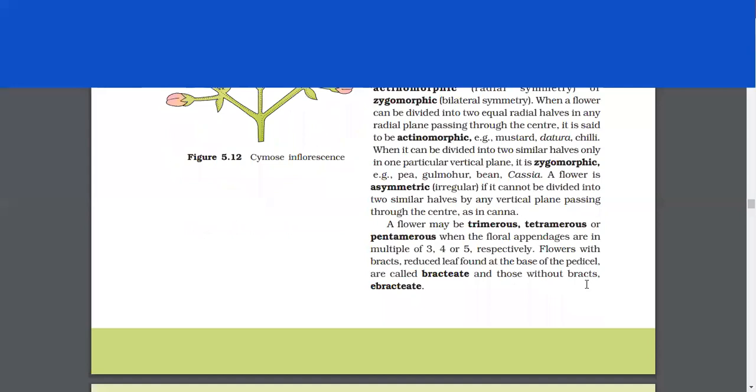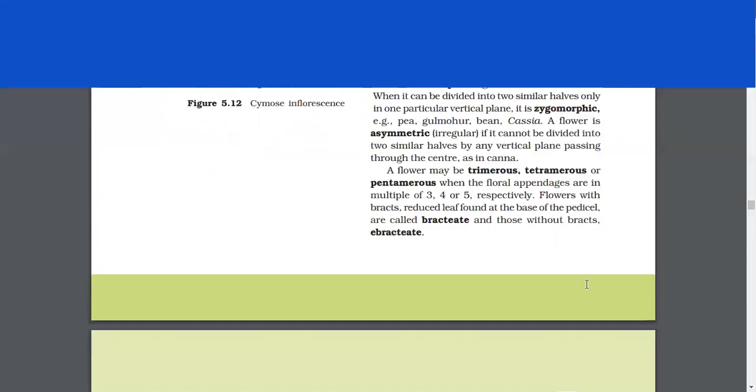A flower may be trimerous, tetramerous or pentamerous when the floral appendages are in multiple of 3, 4 or 5 respectively. Flowers with bracts, reduced leaf, found at the base of the pedicel are called bracteate and those without bracts, ebracteate.